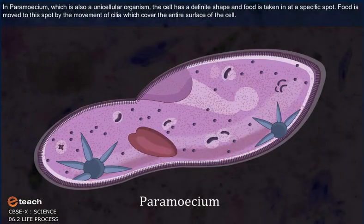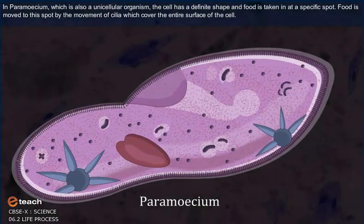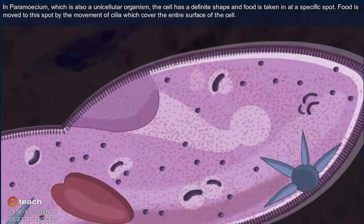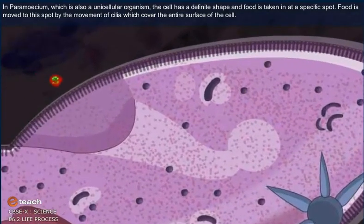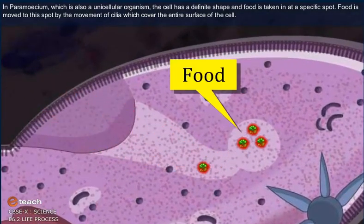In Paramecium, which is also a unicellular organism, the cell has a definite shape and food is taken in at a specific spot. Food is moved to this spot by the movement of cilia which cover the entire surface of the cell.